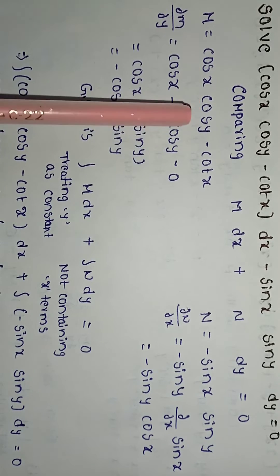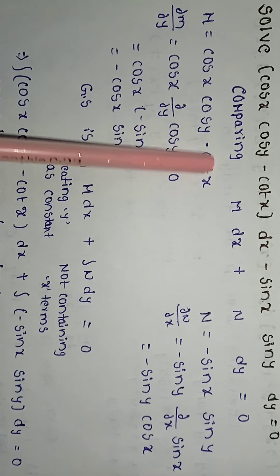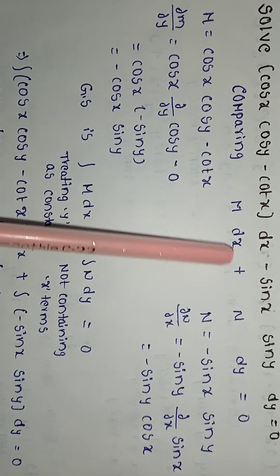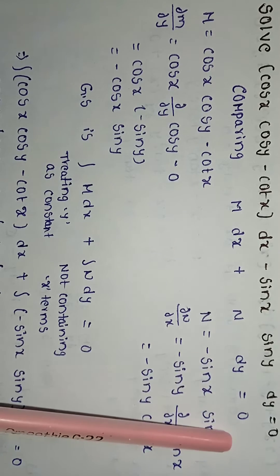Given equation is cos x cos y minus cot x dx minus sin x sin y dy is equal to 0.